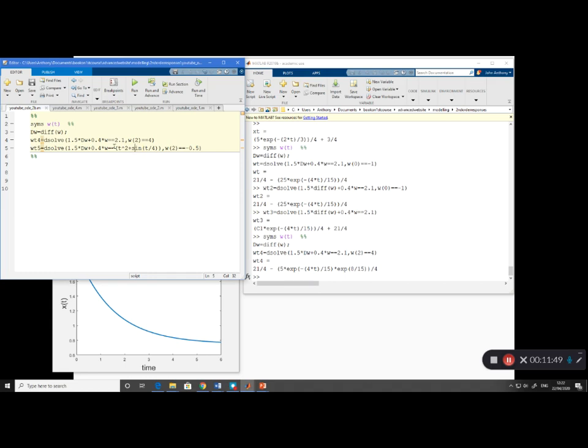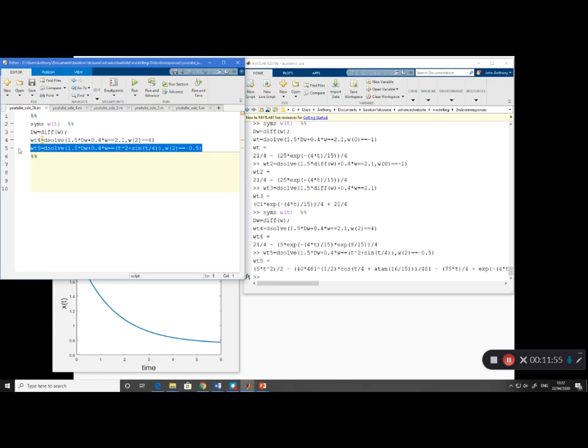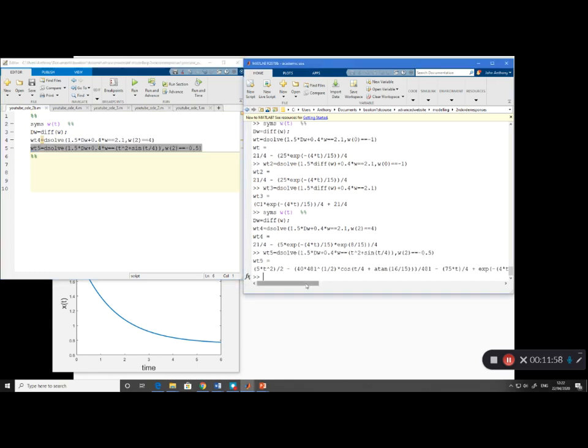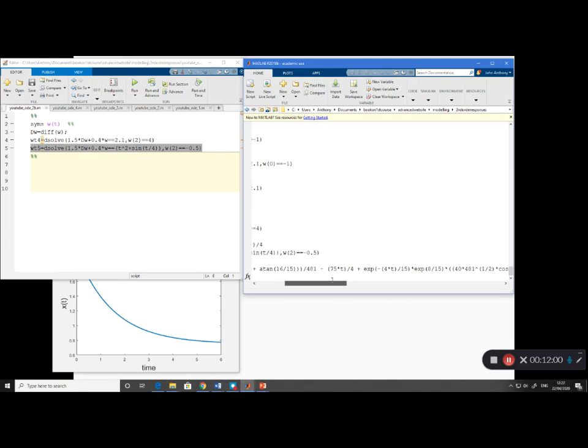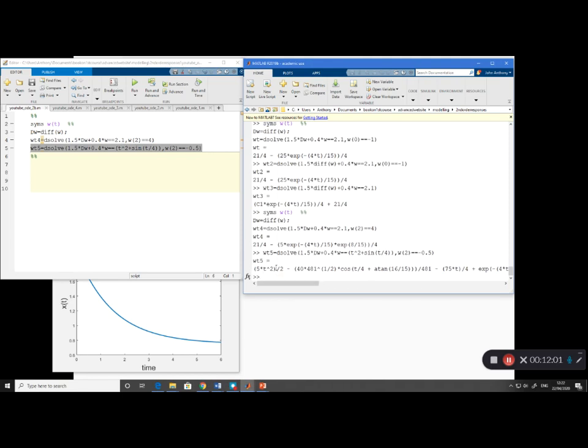And the final line here, line 5, is to show you can put different functions in the input. So there's my t squared plus sine t over 4. And again, if I run that, you see MATLAB's quite happy, but obviously your solution is somewhat messy and complicated. But probably a lot quicker to use MATLAB than do that on pen and paper.